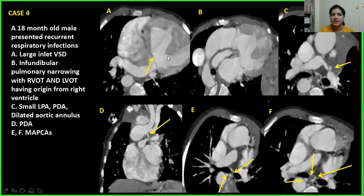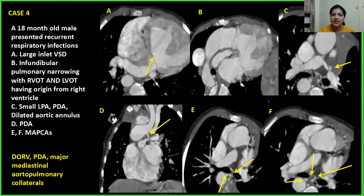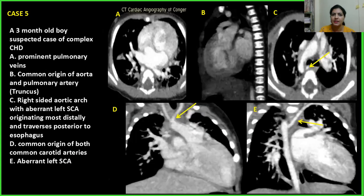Case 4: An 18-month-old female child presented with recurrent respiratory infections. Findings included a large inlet VSD, infundibular pulmonary stenosis, and both RVOT and LVOT having origin from the right ventricle. There was a small LPA, PDA, and dilated aortic annulus. Multiple MAPCAs were also present. This was a case of DORV with PDA and major aortopulmonary collateral arteries.